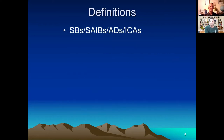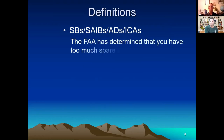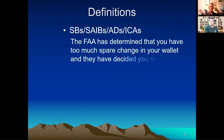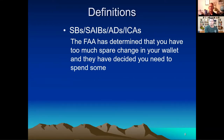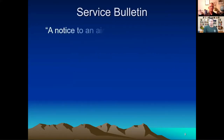The meat of tonight's discussion: SBs, SAIBs, ADs, and ICAs. Basically, when you see one of these come across your inbox, the FAA has made a determination that you have too much money in your wallet. These things are almost never free — they always cost at least a little bit — but you'll probably end up with a better aircraft out of it.